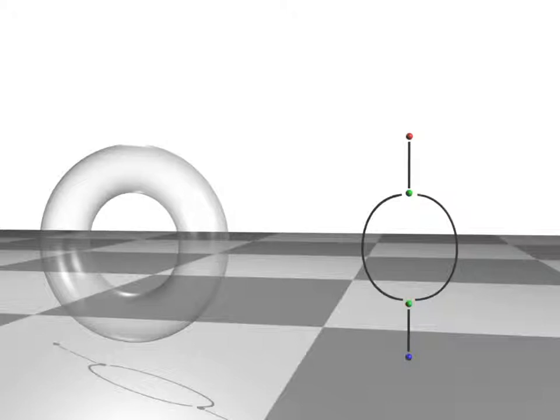The Reeb graph shown on the right expresses this evolution of level sets as a graph. Nodes of the Reeb graph correspond to critical points of the function.